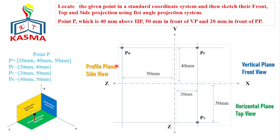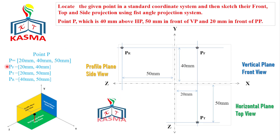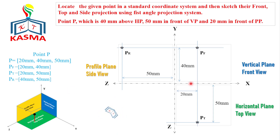This video mainly covered the projections of a point. The question may be given with coordinate values or described as distances in front of the vertical plane, horizontal plane, or profile plane. You can simply convert those descriptions into x, y, z coordinates. The front view uses x and y, the right side view uses y and z, and the top view uses x and z. Thank you for watching — see you soon.